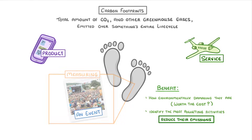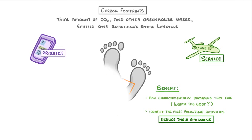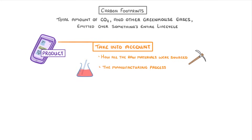The problem, though, is that measuring carbon footprints is actually really hard, and in reality, sometimes impossible. For example, if we consider something relatively simple, like your phone, we'd have to take into account a whole bunch of things, like how all the raw materials were sourced, the manufacturing process required to put it all together, the total amount of power that it uses over its lifetime, and finally how it's disposed of.